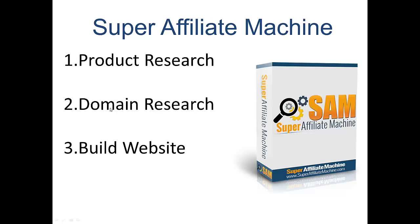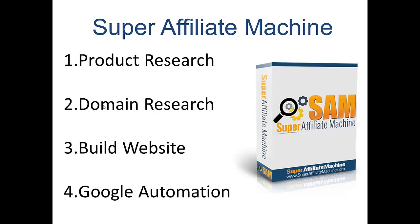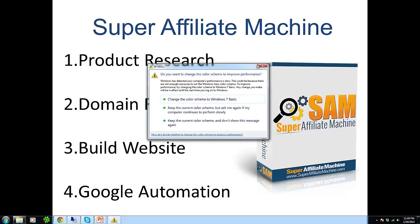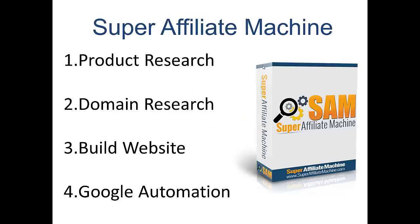Once you've got your keyword and your domain, it's time to build the website. This is a WordPress-based website, but you don't have to go into WordPress — everything is done from within Super Affiliate Machine. That includes creating and publishing optimized posts with a high level of good SEO practices, meaning good internal linking and external links to authority sites. It automates and helps you with that entire process. Finally, once your website is created, you build your social signals and backlinks using Google automation methods that work today.